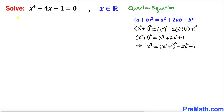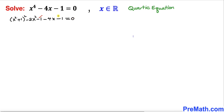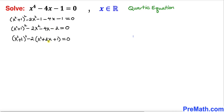We replace x⁴ with this expression, writing: (x² + 1)² - 2x² - 1 - 4x - 1 = 0. The two -1 terms combine, and after combining like terms in descending order, we can see that -2 is common among all three remaining terms, so we factor out -2. Inside the parentheses we have x² + 2x + 1.